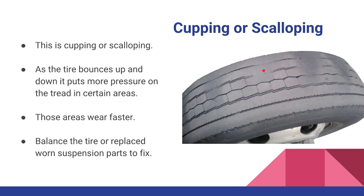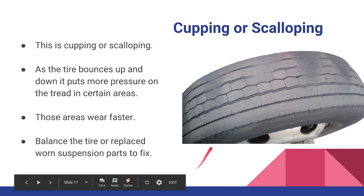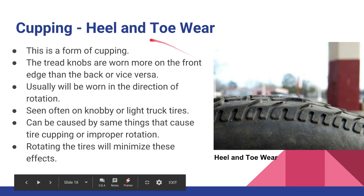When a shock is bad and allows the tire to bounce too much, it puts pressure on spots as the tire comes down on the road, wearing those spots faster than the spots that don't contact the road as hard. Tire cupping can be caused by tire balance, a bad shock, or the tire turning in and out and scrubbing a spot. The only fix is to replace the tire — it causes vibration and the root cause must be found and fixed.